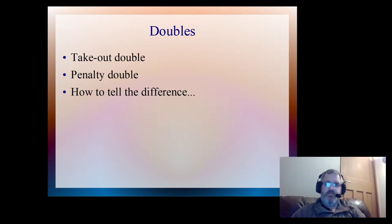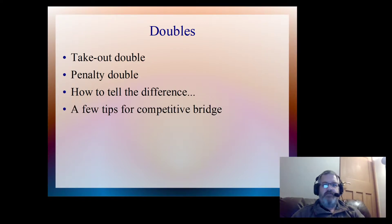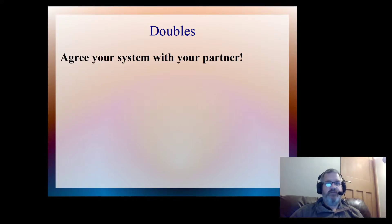So in this video I'm going to set up some rules about how to tell the difference between the two different types of doubles. And then we're also going to look at some competitive bidding where doubles can play a really important key part. The number one rule when it comes to doubles, and in fact with any part of the system that you might want to change or add in, is to agree the system with your partner. That's absolutely vital.